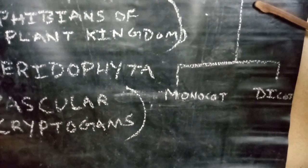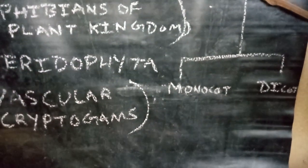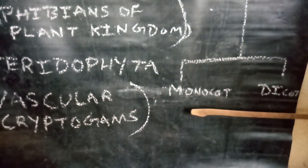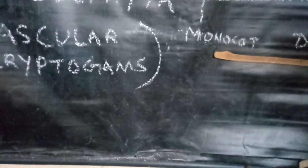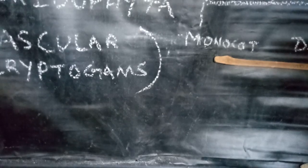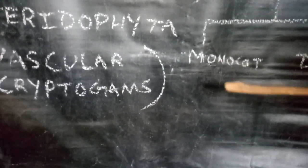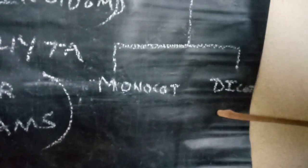Angiosperms are divided into two classes: Monocot and Dicot. Monocot means seeds with one cotyledon. Dicot means seeds with two cotyledons.